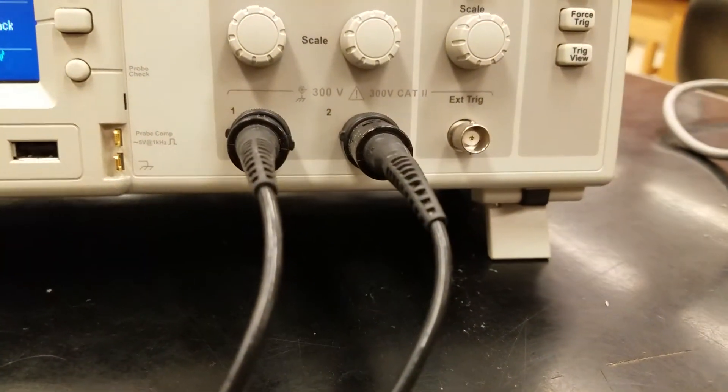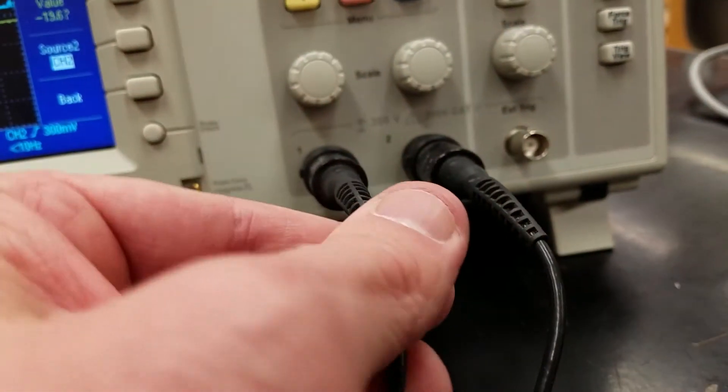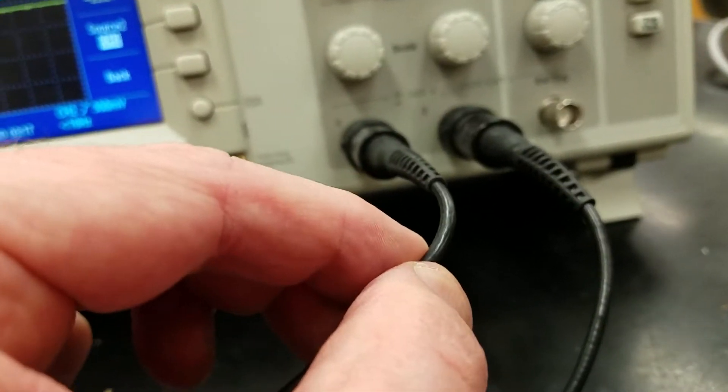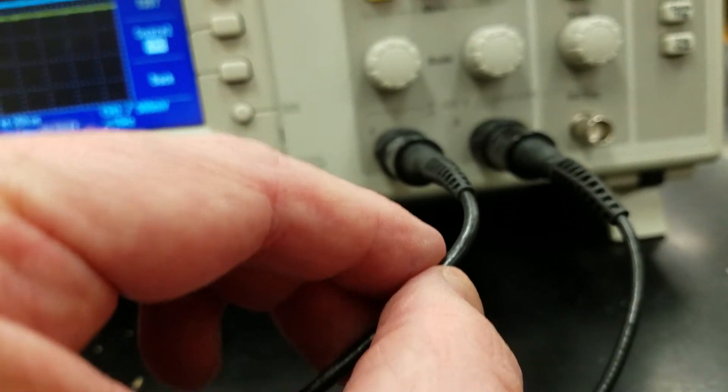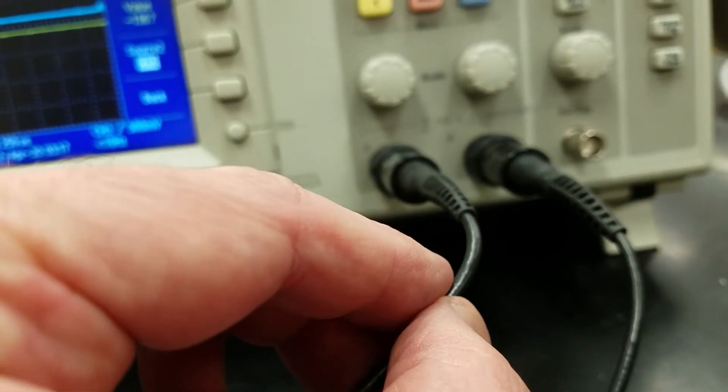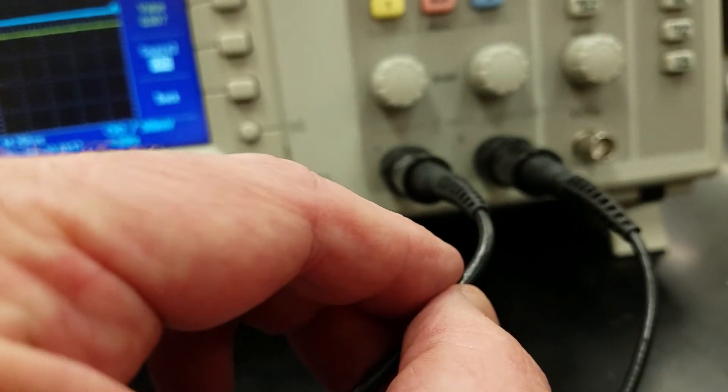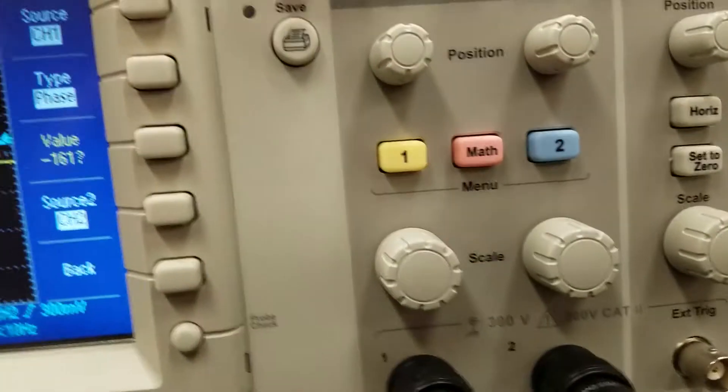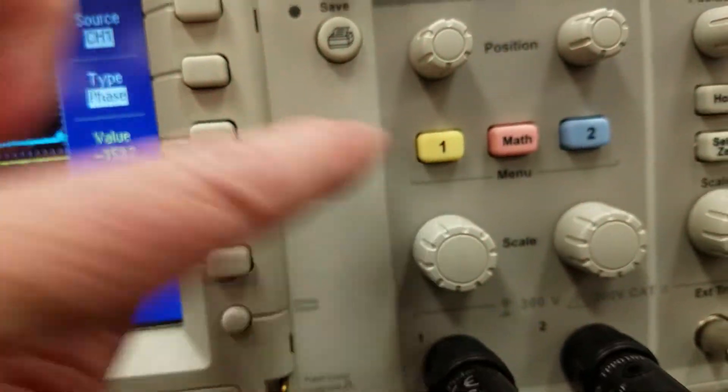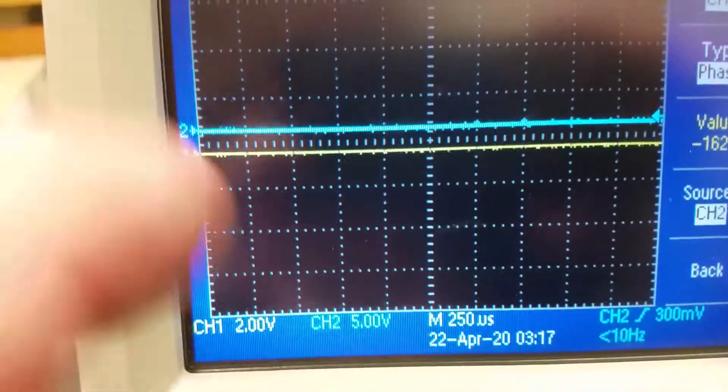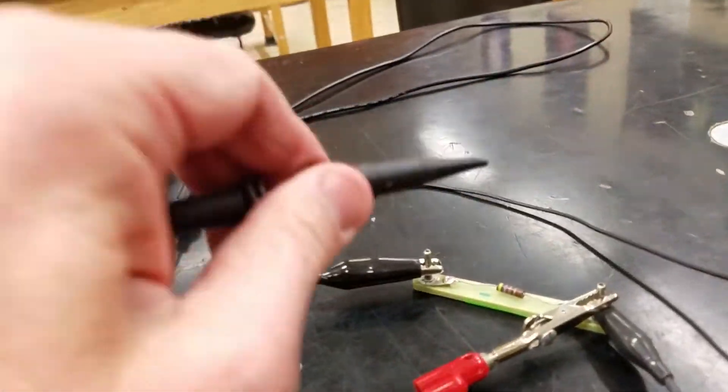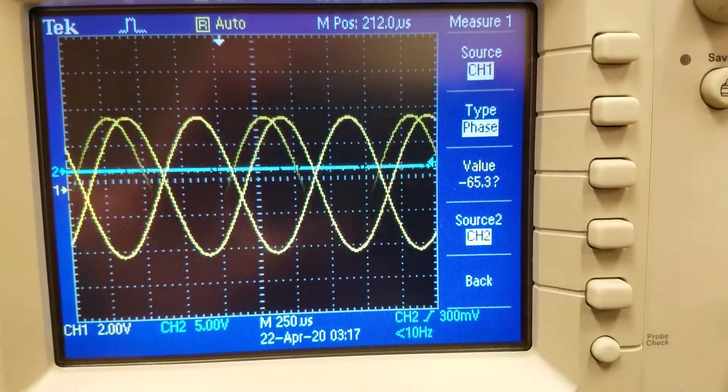So I've got two channels the first channel right here channel one I'm going to put across the resistor so that'll measure the voltage across the resistor but then I can pretend that's the current because the current and the voltage across the resistor are in phase. So that's this yellow button right here so that will correspond to this yellow or green curve right here. So let me hook that up so I'll take channel one and put it across the resistor right here go back to my oscilloscope and I'm getting a sinusoidal signal.